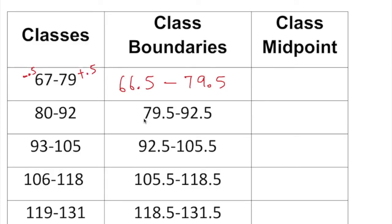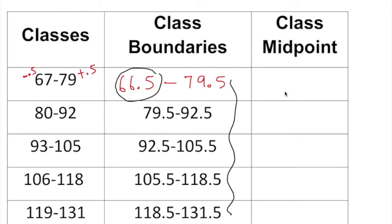When you actually draw a histogram, the only boundaries you need are the lower class boundary of the first class and all the upper class boundaries. Now, how do you find the class midpoint? The class midpoint is basically the average — you take the higher number plus the smaller number and divide by 2. You can use a simple calculator to get these answers.